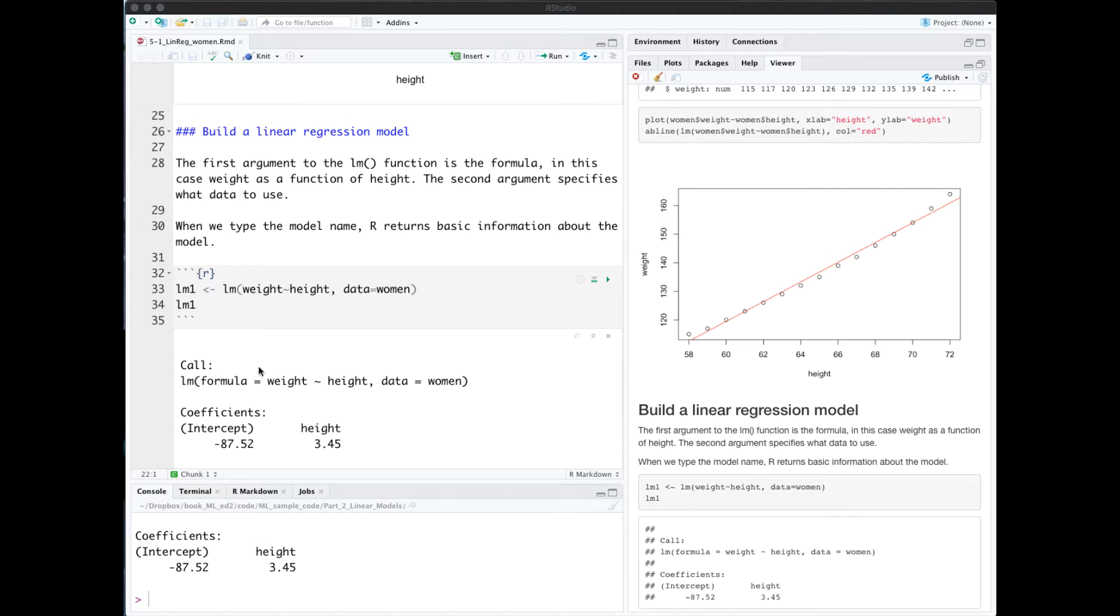it prints our formula and then the coefficients. We generally don't care about the intercept. We care about any coefficient for a predictor variable. So in this case, the coefficient learned from the data is height of 3.45.